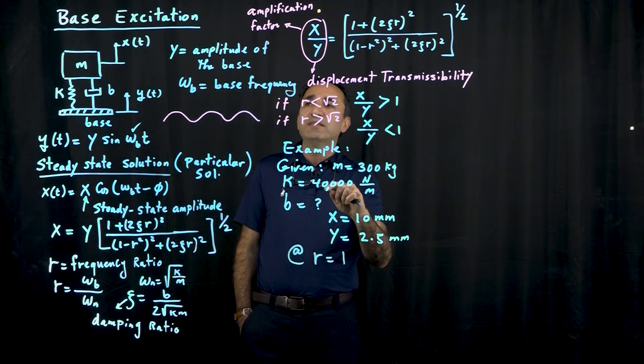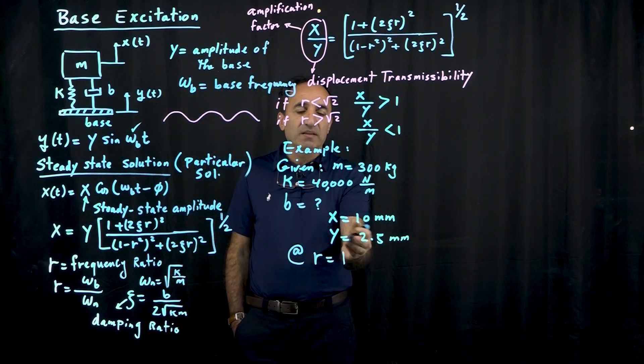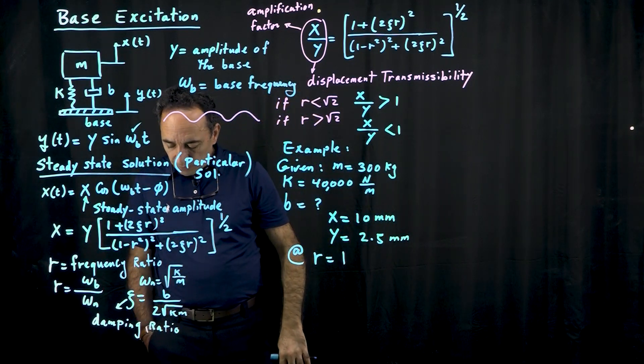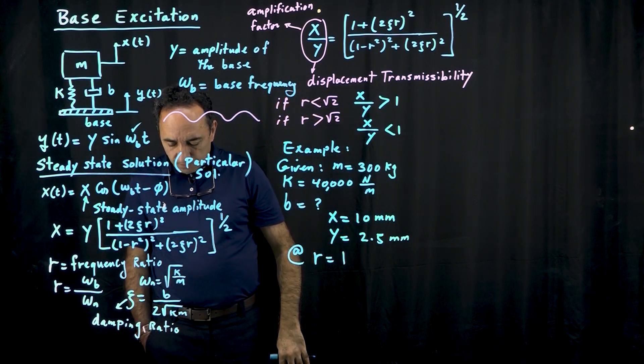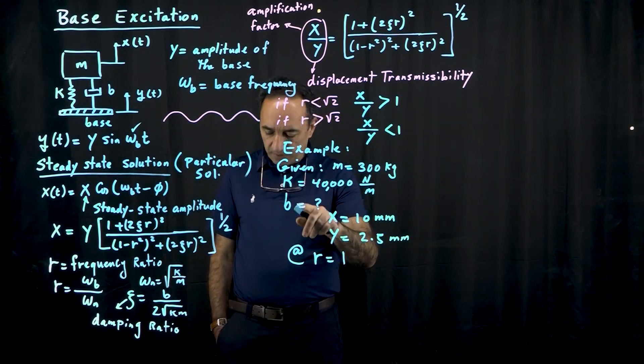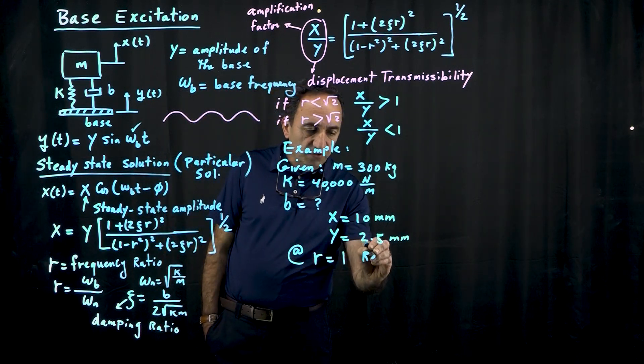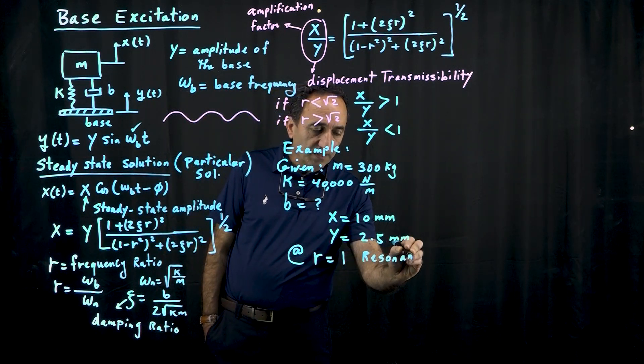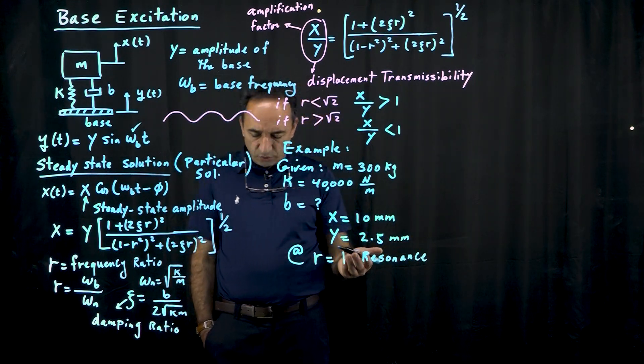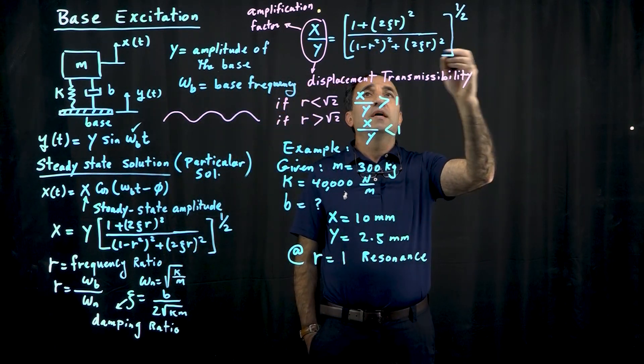Now resonance is very dangerous for systems when they don't have any damping. In fact, for mechanical systems, that's a disaster because the amplitude will get really large. So what we are trying to find, as I said, is the damping coefficient. So this is happening at resonance. That's why we have such a high amplification. So let's go to our equation, actually. And you see this equation right here? x over y.